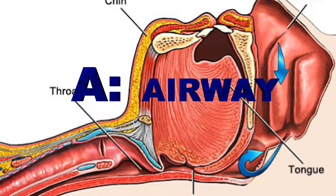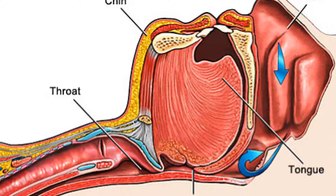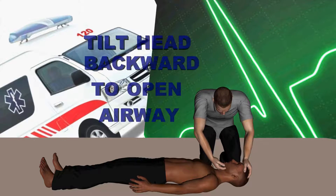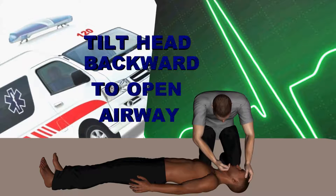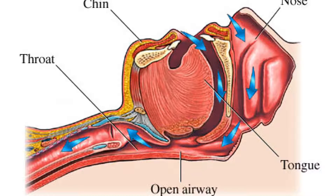Airway: The airway is the tube which takes air from the mouth and nose to the lungs. When a casualty is unconscious, their tongue can fall backwards and block their airway. To open someone's airway, place one hand on their forehead and tilt their head backwards. Then place two fingers on the bony part of their chin and lift it. This is known as the head tilt, chin lift maneuver.